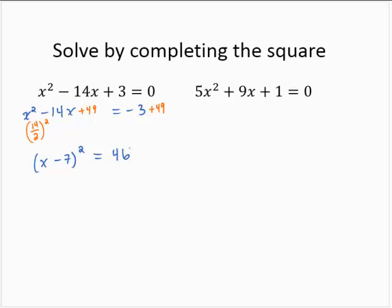Now we apply the square root property. So x minus 7 is the positive or negative square root of 46. And we isolate x by adding 7 to both sides. So x is equal to 7 plus or minus the square root of 46.